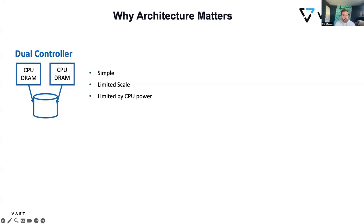I can upgrade my controllers to be more powerful, but ultimately if I don't have any more options to upgrade, my only choice is to create an island. It's not uncommon for customers with a decent amount of data using a dual controller architecture to have a lot of systems — I've seen 20, 30, 40, 50 dual controller systems all set up next to each other, every one an island.